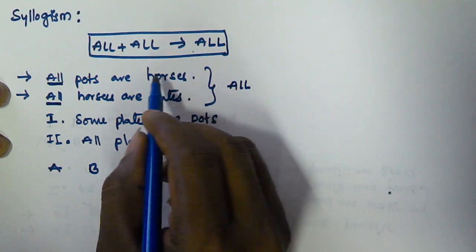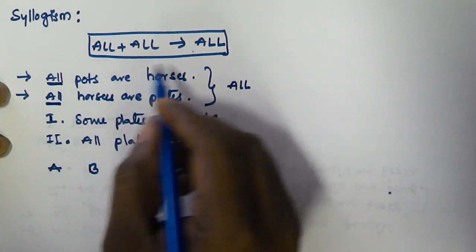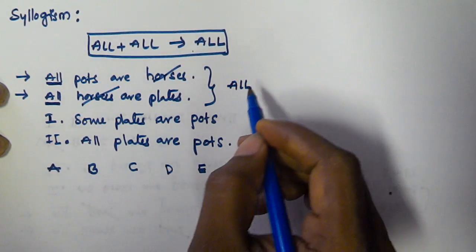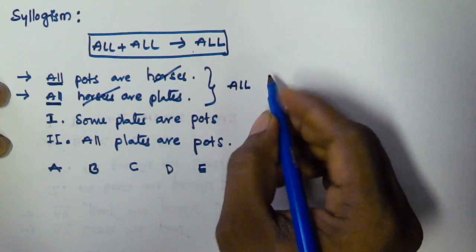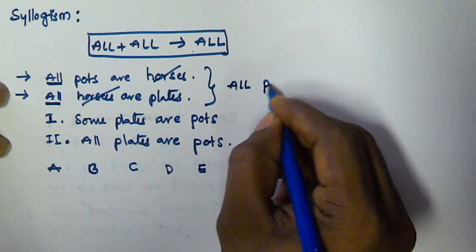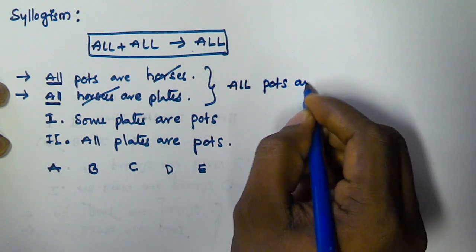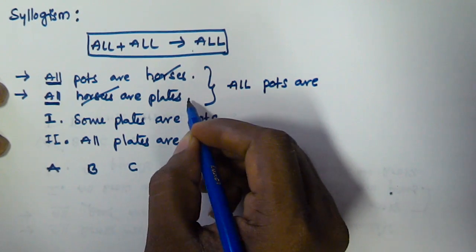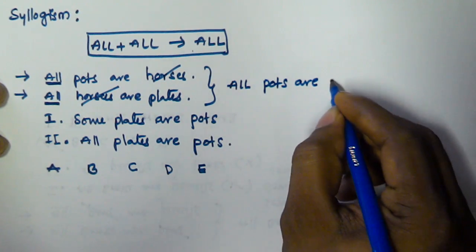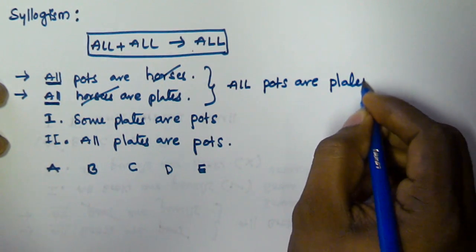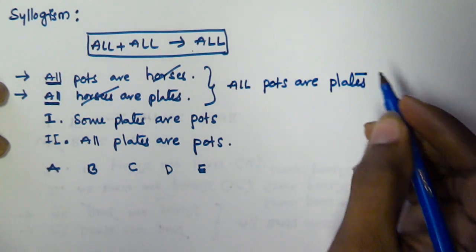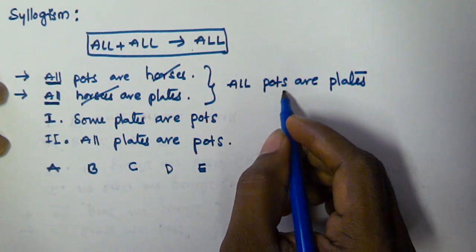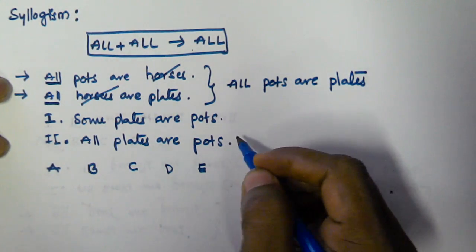We cancel 'horses' and 'horses,' then we take the subject from the first syllogism, that is 'all parts are,' and we take the predicate from the second syllogism, that is 'plates.' So the derived conclusion is 'All parts are plates.' Now we need to check if this conclusion is in the given conclusions or not.